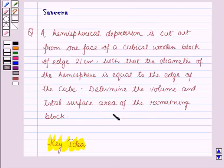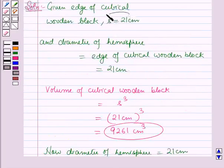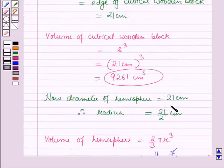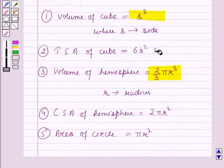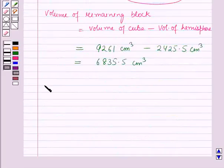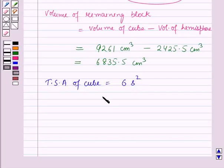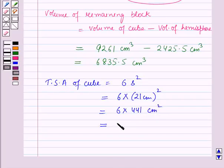Now we have to find the total surface area of the remaining block. The edge of the cube is 21 cm and the radius of the hemisphere is 21/2 cm. The total surface area of the cube is equal to 6 × side², which equals 6 × 21² = 6 × 441 = 2646 cm².